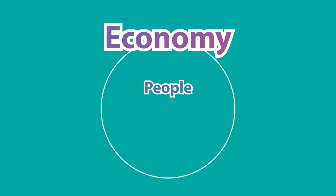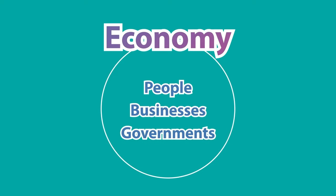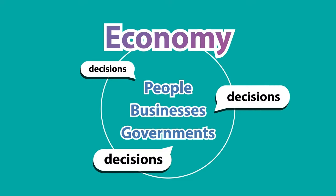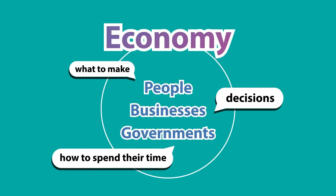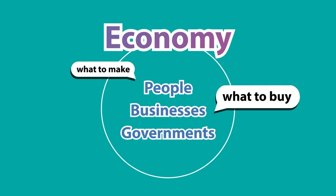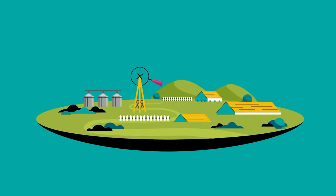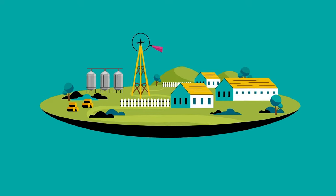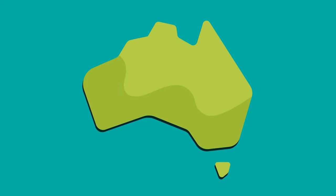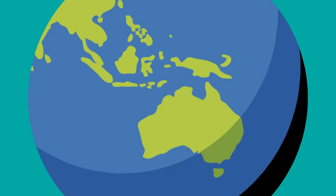So, an economy can be thought of as a system where a group of people, businesses, or governments make decisions. They have to choose what to make, how to spend their time, and what to buy. There can be an economy for a town or community, or for a country, or even the world.